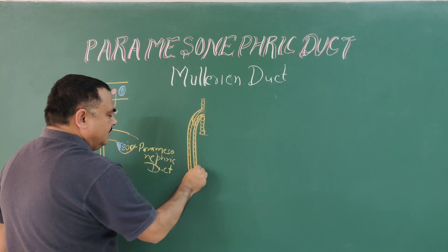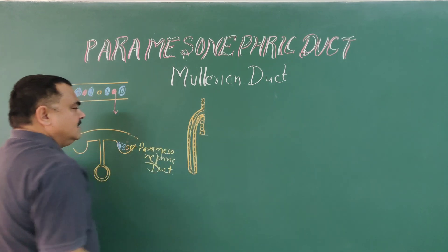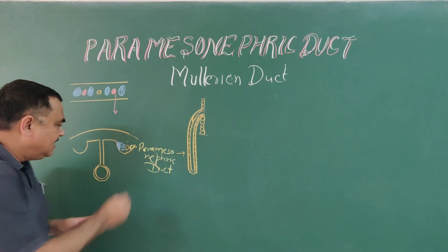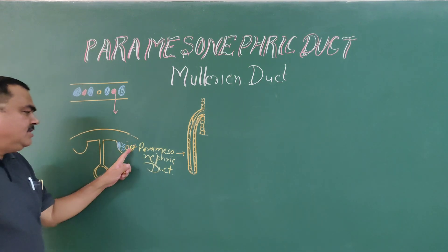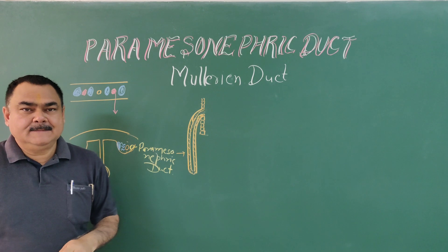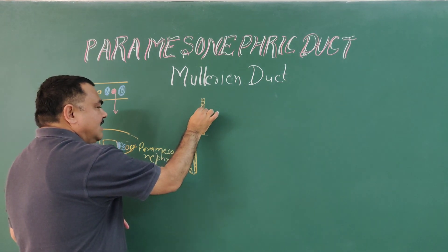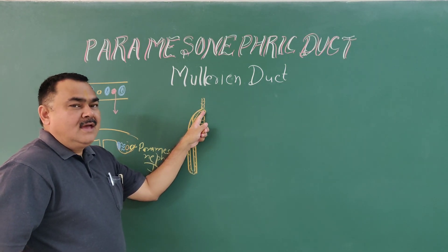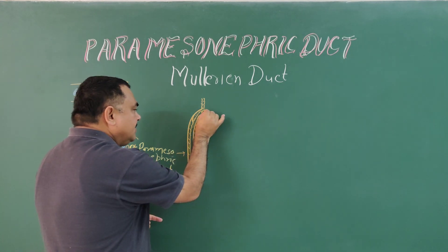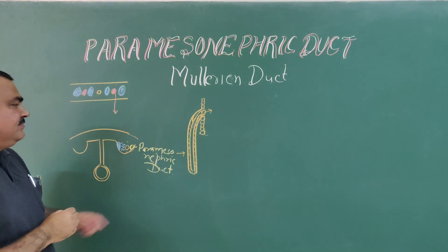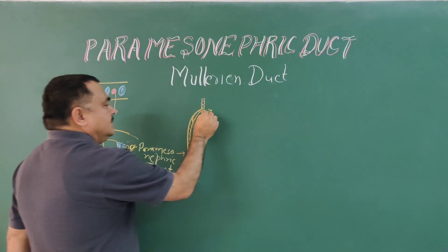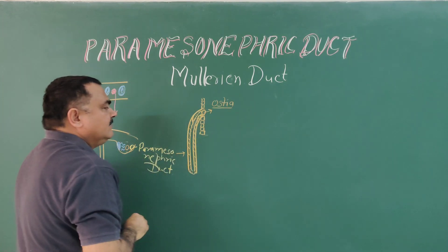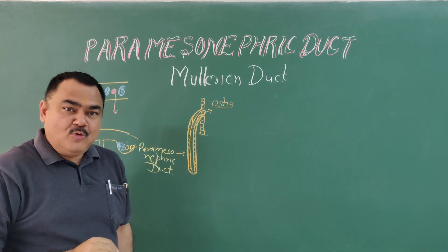So it forms the mesonephric duct. The mesonephric duct develops from invagination of the coelomic epithelium, which invaginates and forms the duct. The upper end of this duct is open, and through this open end it communicates with the peritoneal cavity. This opening forms the ostium of the fallopian tube.